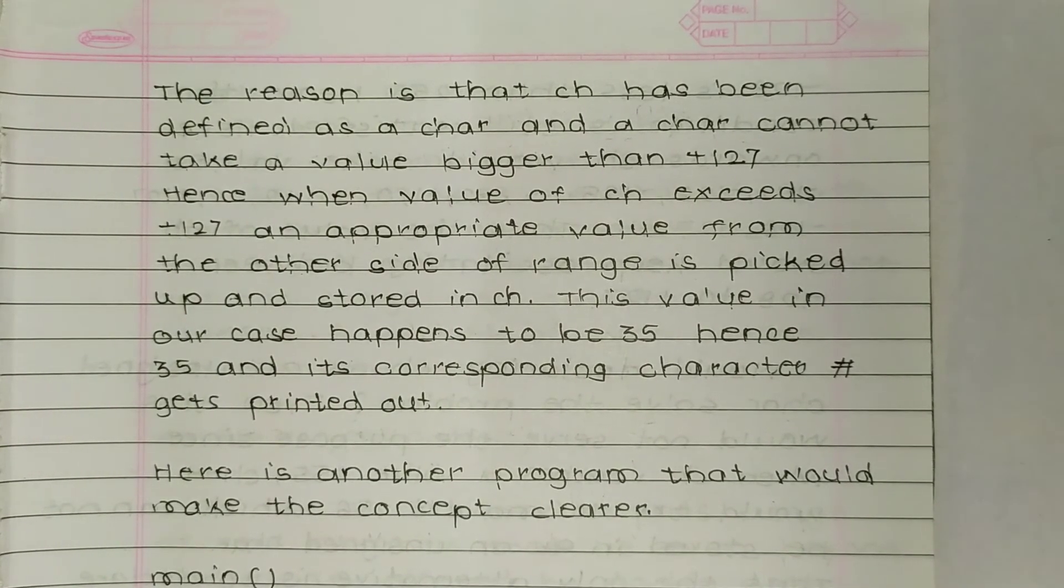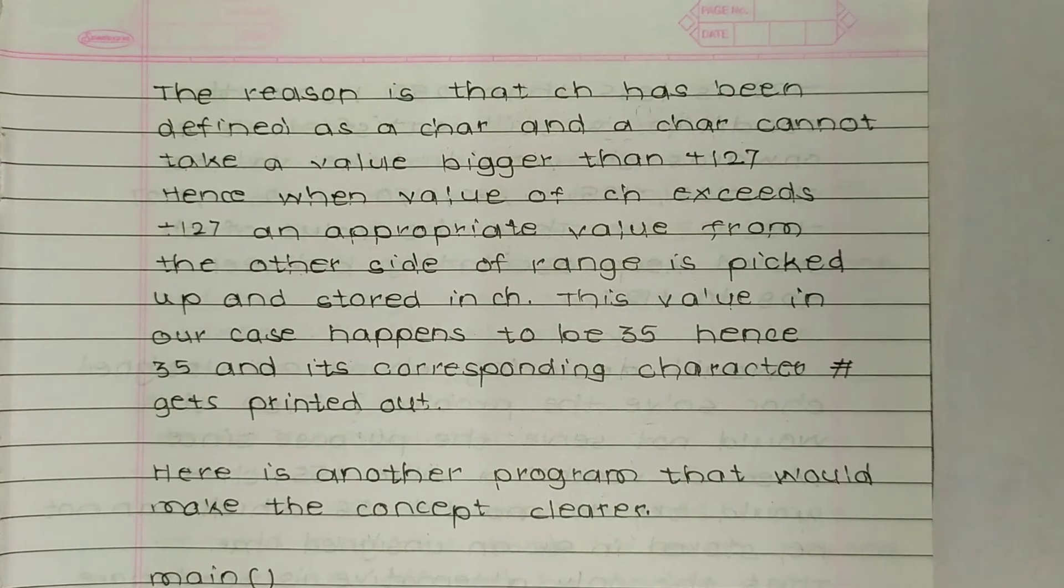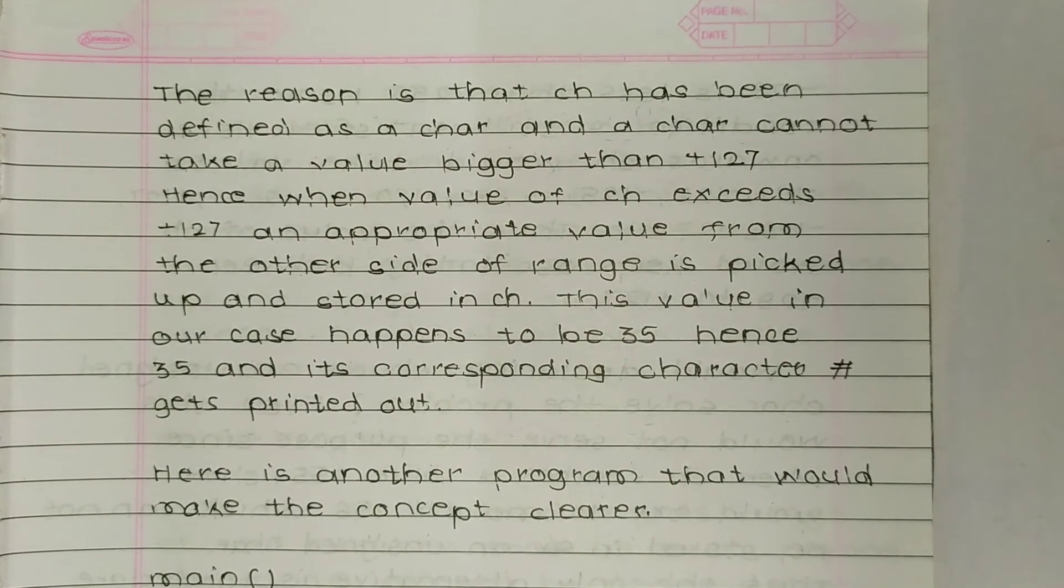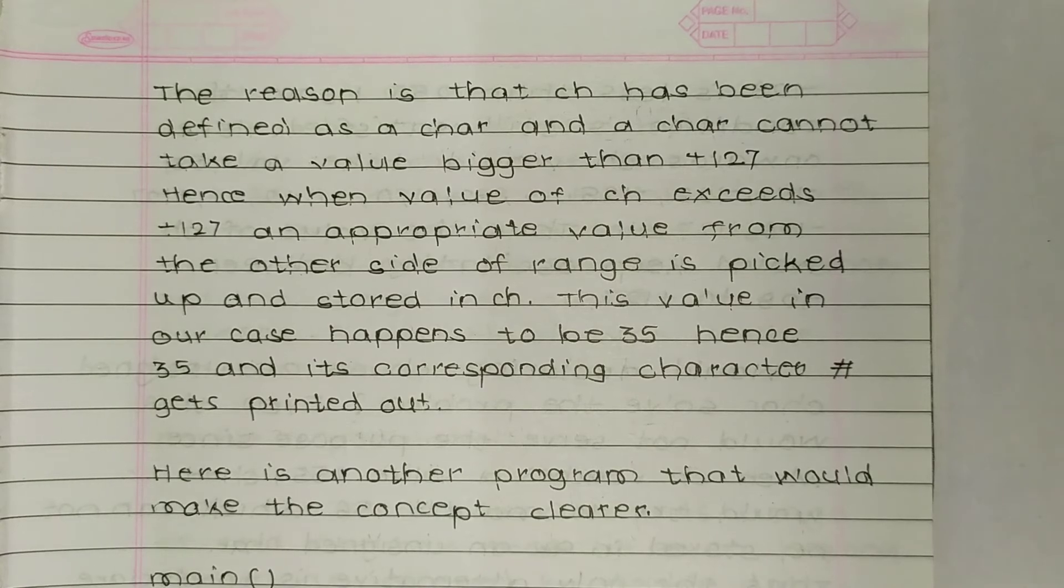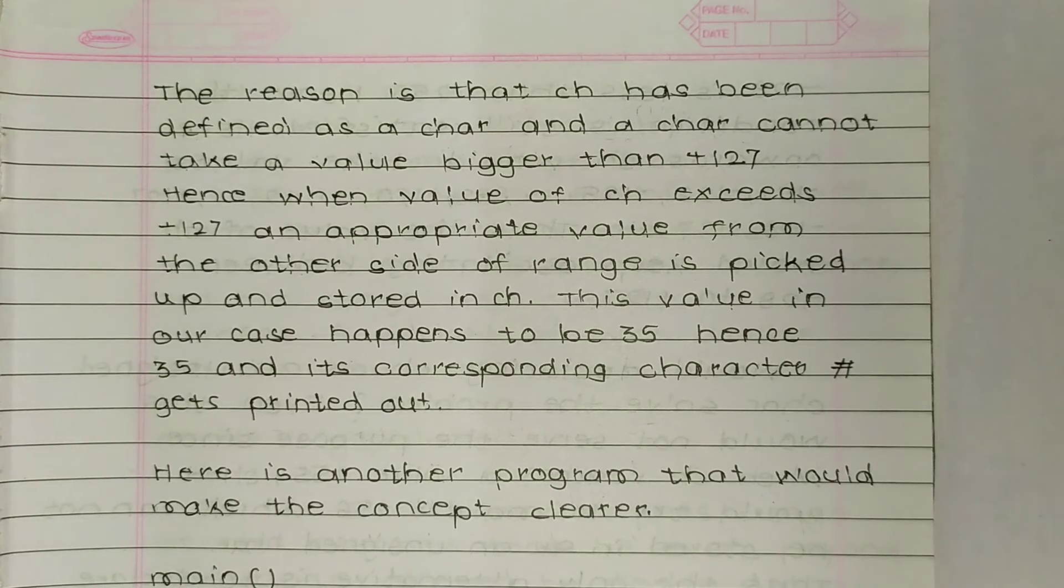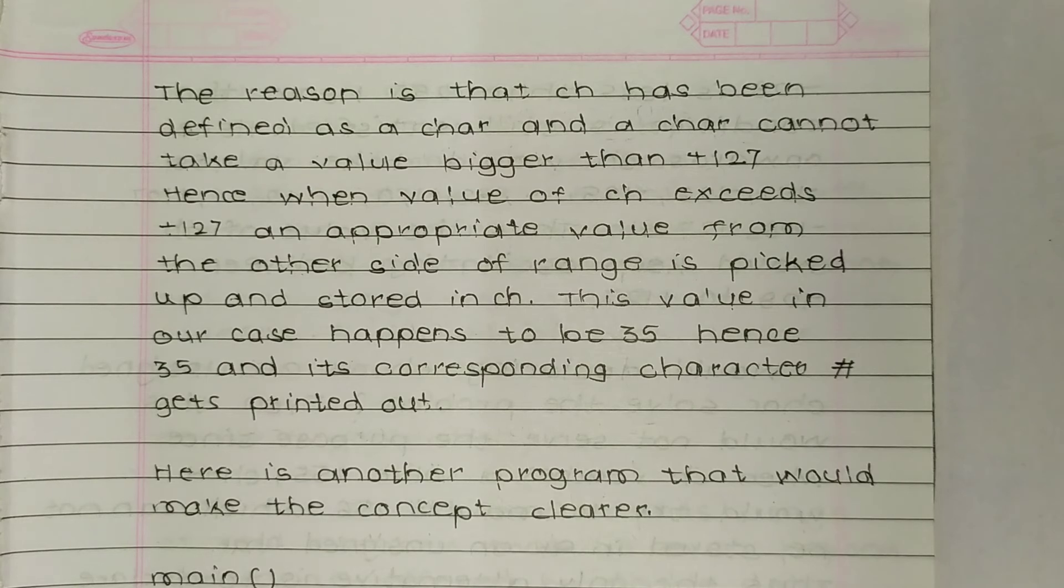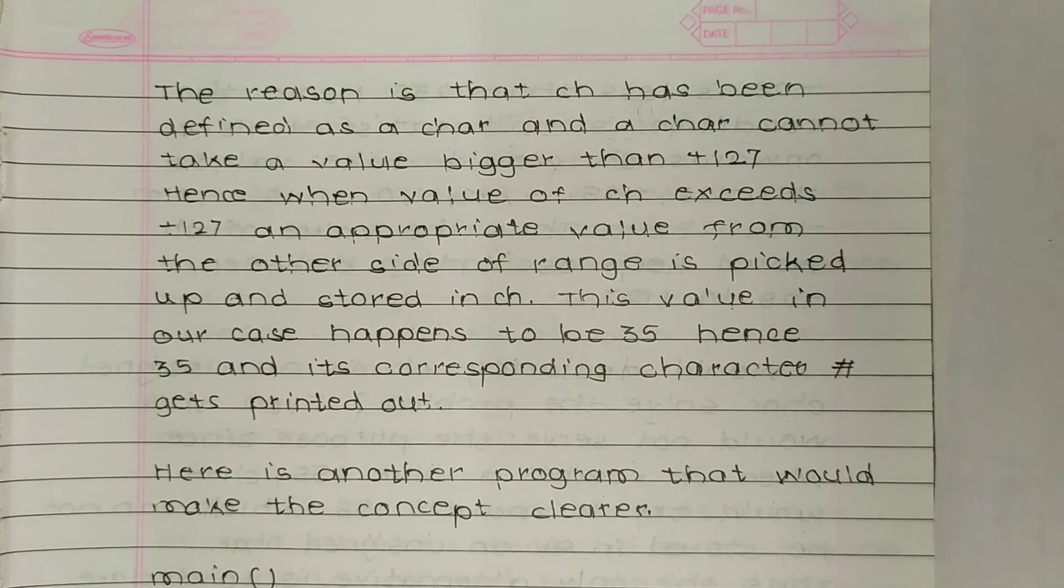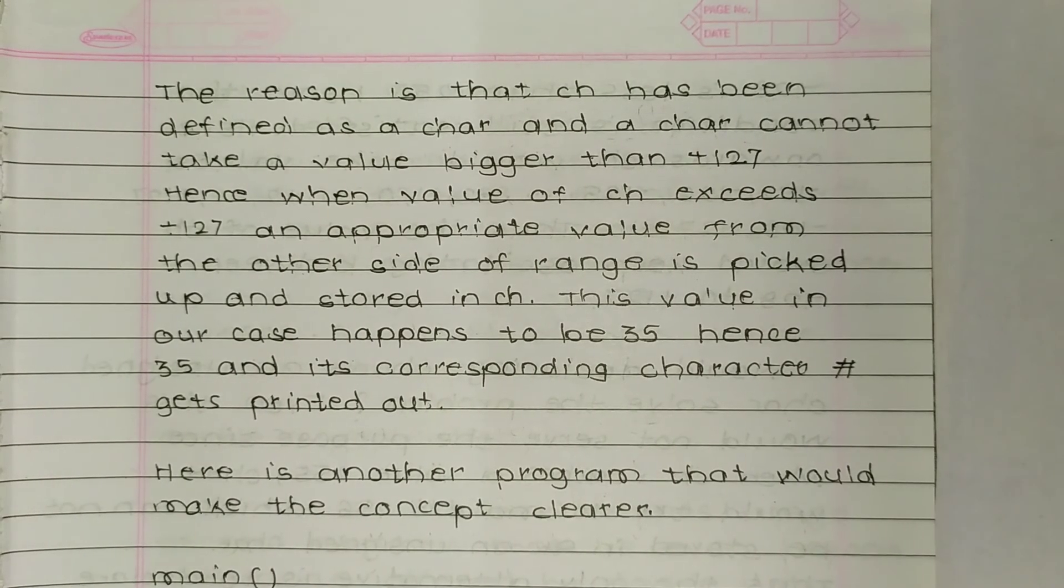The reason is that char ch has been defined as char, and char cannot take value bigger than plus 127. Hence when the value of ch exceeds plus 127, an appropriate value from the other side of range is picked up and stored in ch.